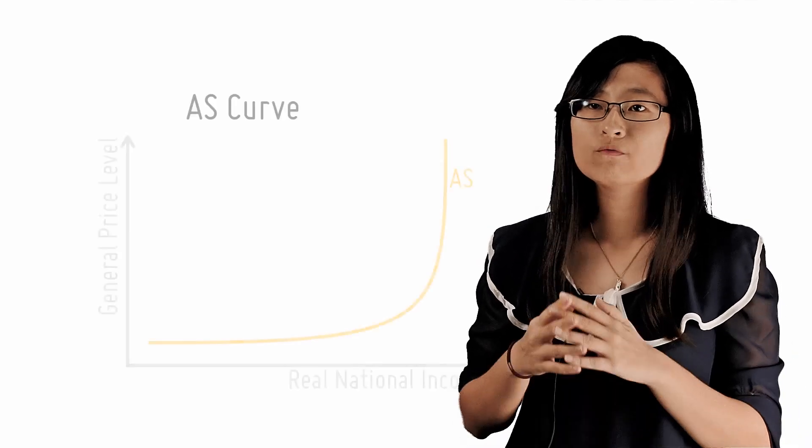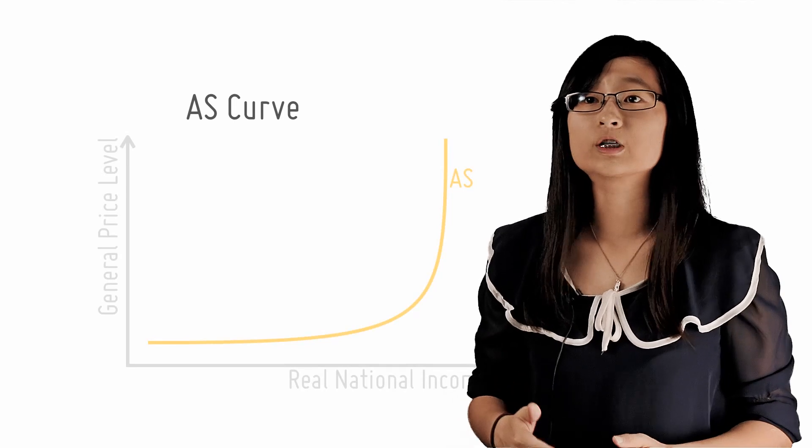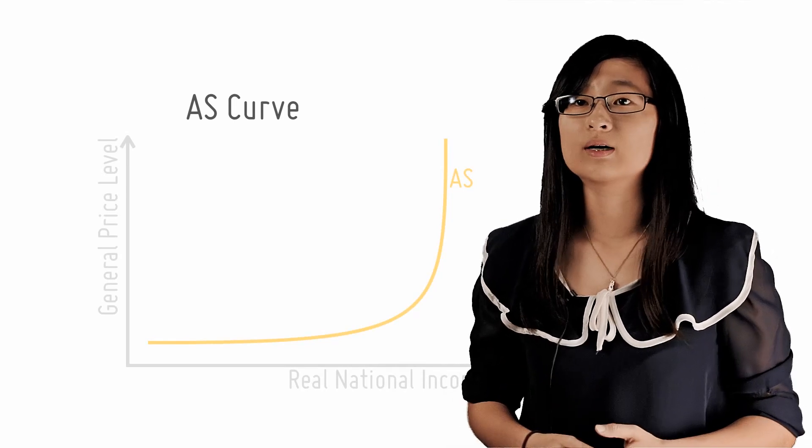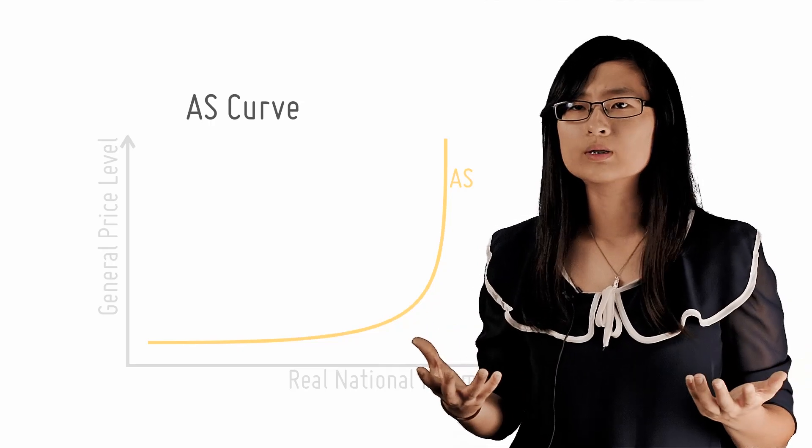Since the AS curve has two extreme regions, it can shift in two very different ways. This lesson will explain what each of these movements mean and when to shift the curve in that manner. So what are these two main movements?